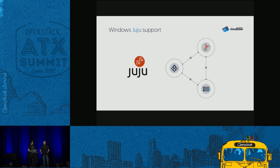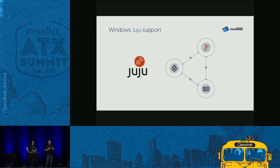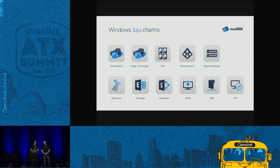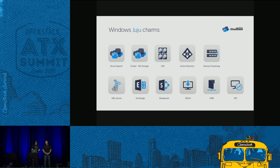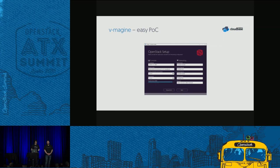Some time back we decided to bring Juju to the Windows platform, including Juju Charms. For those using Juju as your orchestration mechanism, we have a significant amount of Windows workloads available — SQL Server, SharePoint, Windows Clustering, Active Directory, IIS, WSUS, SMB, VDI, and so on — all the main things that come to mind. For those not using Juju, we also have this technology available as Heat templates.